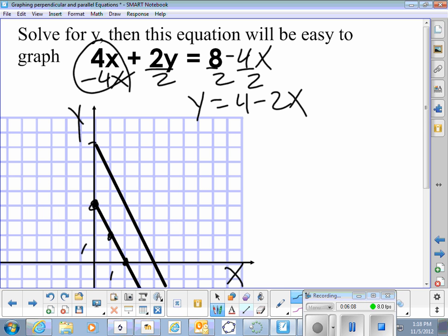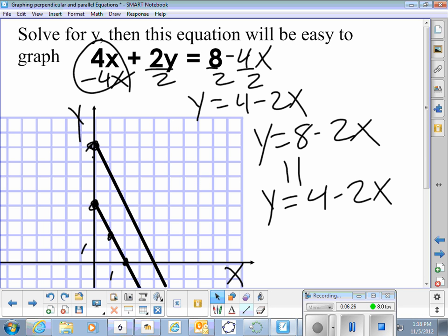So what would be the equation of that line? Well it crosses the y axis at, there's 4, 5, 6, 7, 8. So y equals 8 minus 2x would be parallel to y equals 4 minus 2x. So the two lines with nothing in between them means parallel.